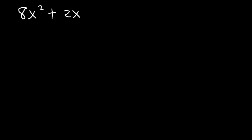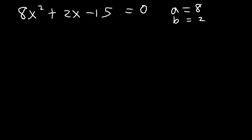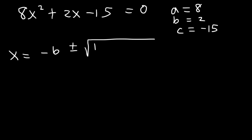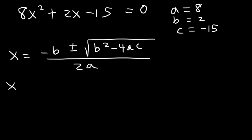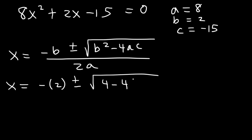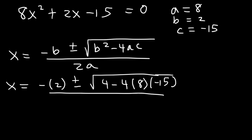Now let's try another example: 8x squared plus 2x minus 15. Use the quadratic formula to find the values of x. We can see that a is equal to 8, b is 2, and c is negative 15. So using the quadratic formula, x equals negative b plus or minus the square root of b squared minus 4ac divided by 2a. b squared is positive 4, minus 4 times 8 times negative 15, divided by 2 times 8 which is 16.